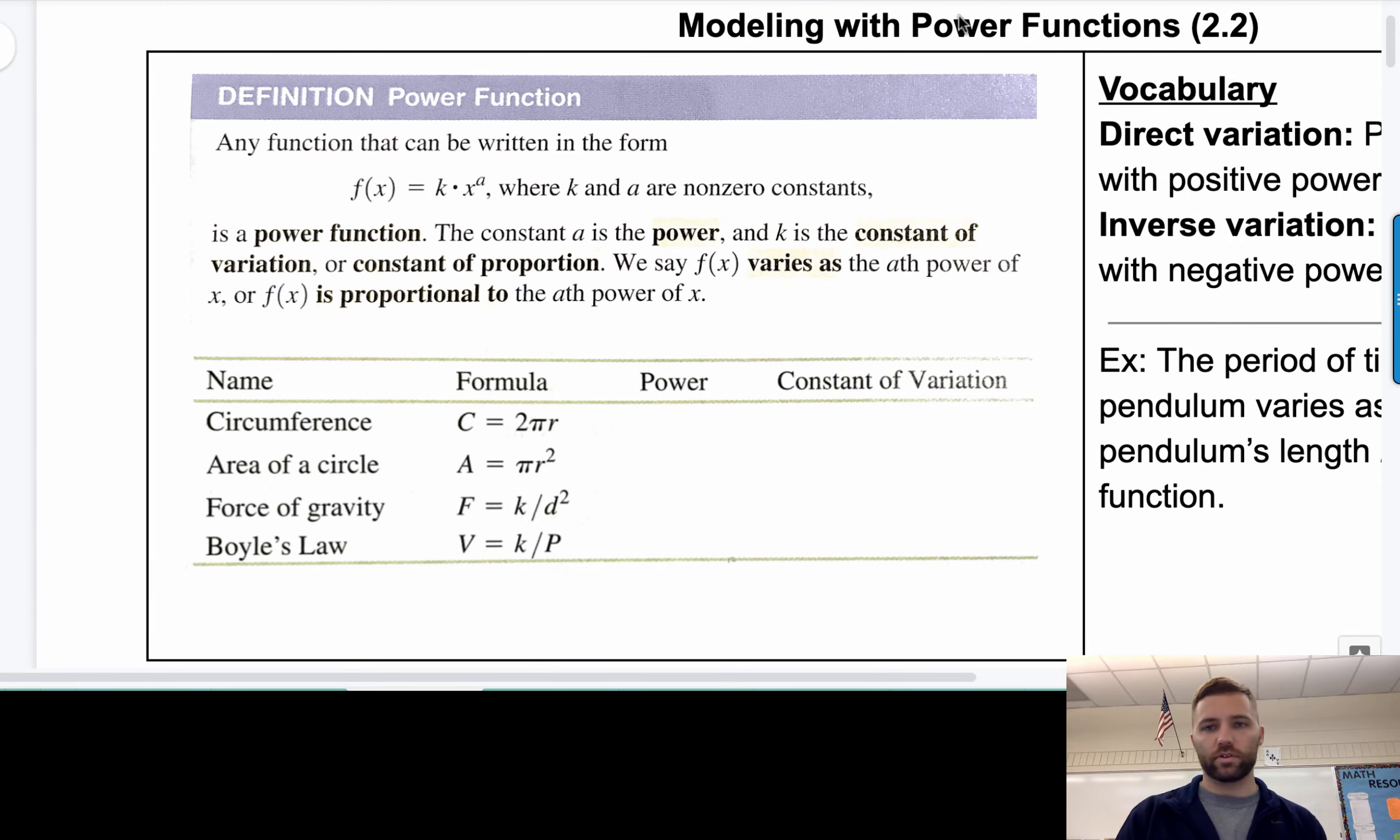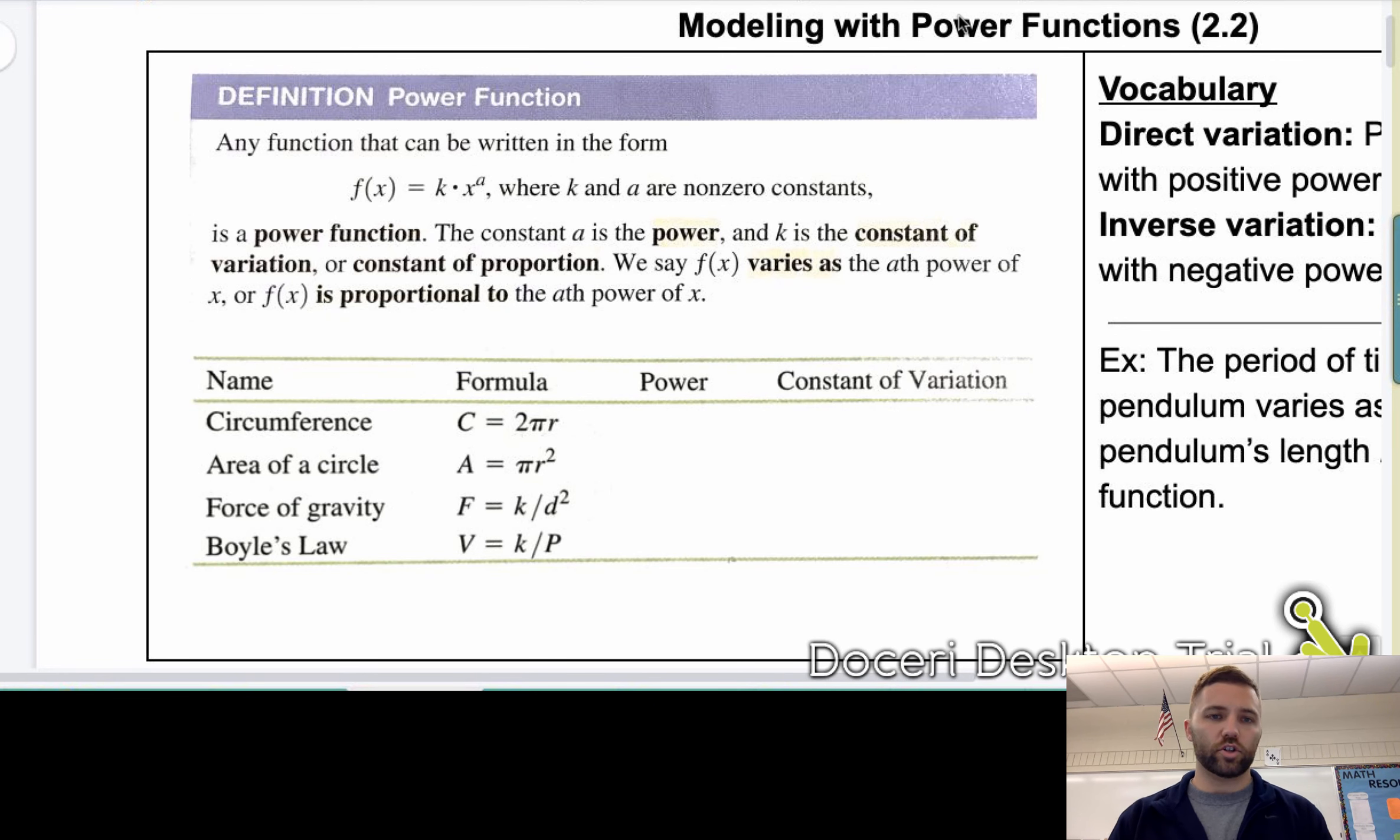This is a lesson over section 2.2, which we're talking about modeling with power functions. A power function is defined as any function that can be written as f of x equals k times x to the a, where k and a are non-zero constants. That means k and a are not zeros.